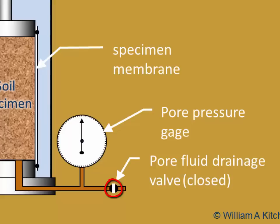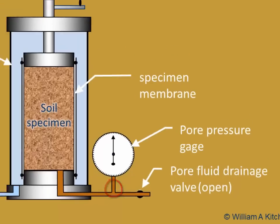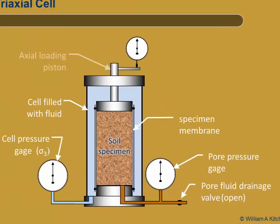There is a valve which controls drainage within the specimen. The valve can either be closed, thereby preventing drainage, or open, which allows for drainage. A loading piston on top of the cell allows an axial force to be applied to the soil specimen. A dial gauge attached to the top of the specimen lets us measure the vertical deformation.